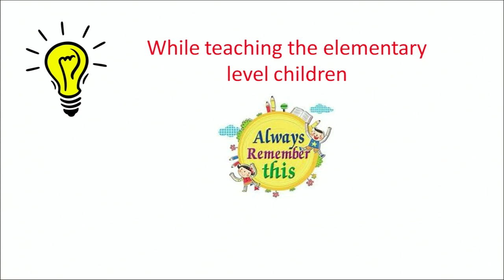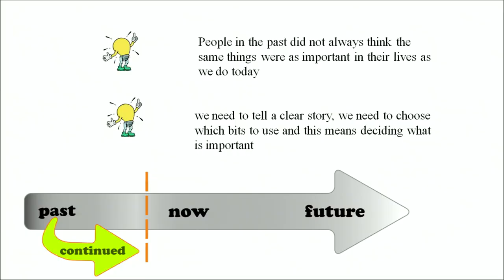While teaching at elementary level, we should remember that history can be told like a story about the past in different ways. This does not mean that one version is right and another is wrong. Children should be encouraged to think and come up with ideas about people and events. People in the past did not always think the same things were important as we do today. Lastly, we need to tell a clear story, choose which bits to use — deciding what is important — and connect children from past to present to make them ready for a better future. Thank you very much.